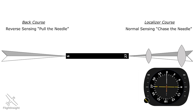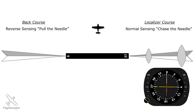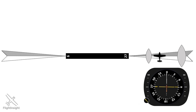Let's get into some examples. We have this indication. We'll start with the simple step of figuring out aircraft heading — it's due north in this case. But where are we in relation to the runway? The green course selector is set to 270, which means our intention is to fly inbound to runway 27, meaning we're flying the localizer course. Since the needle is centered, we're perfectly on course, which puts our aircraft here.